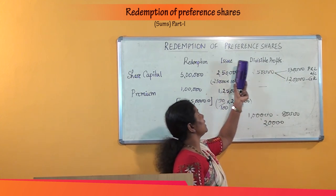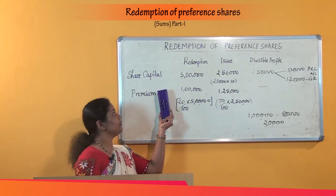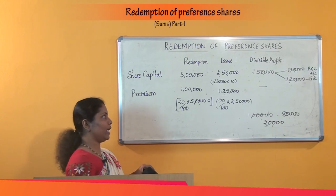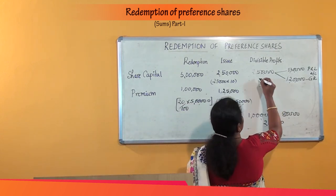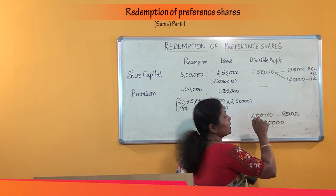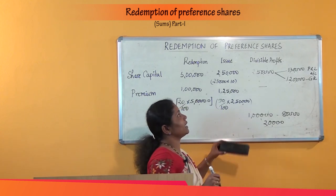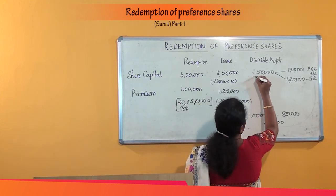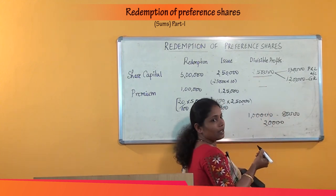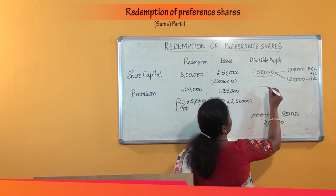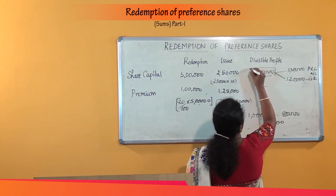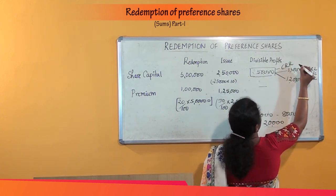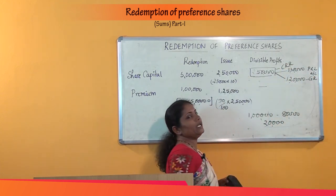The amount utilized for redemption of nominal value of share capital from divisible profits is Rs. 2,50,000 — Rs. 1,30,000 from profit and loss account and Rs. 1,20,000 from general reserve. Whenever preference share capital is redeemed out of divisible profits, we must create a capital redemption reserve to the extent of Rs. 2,50,000.